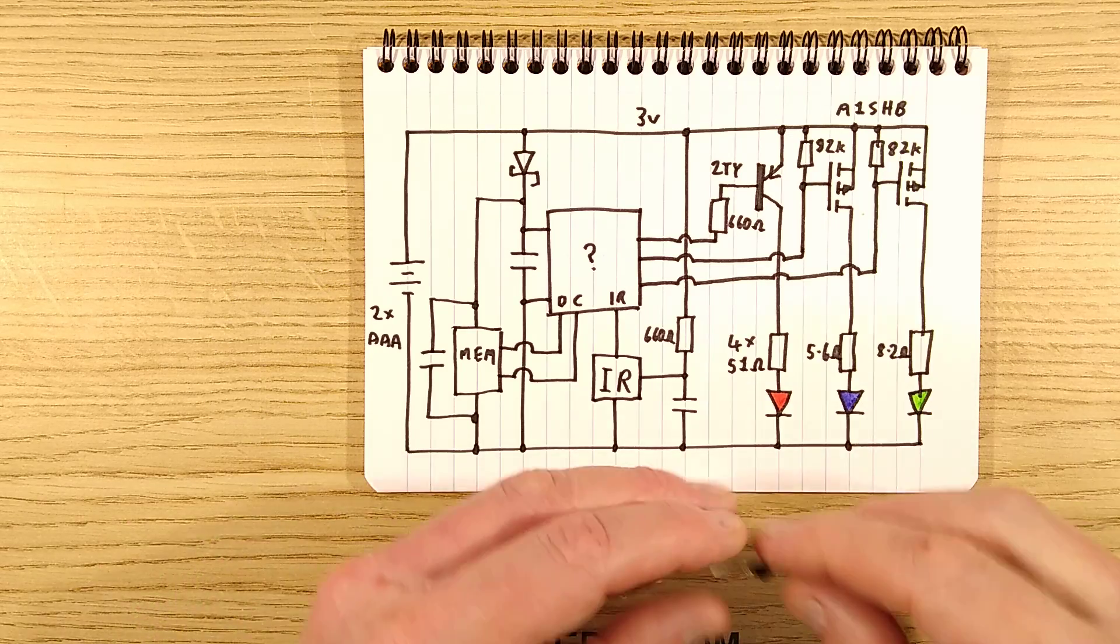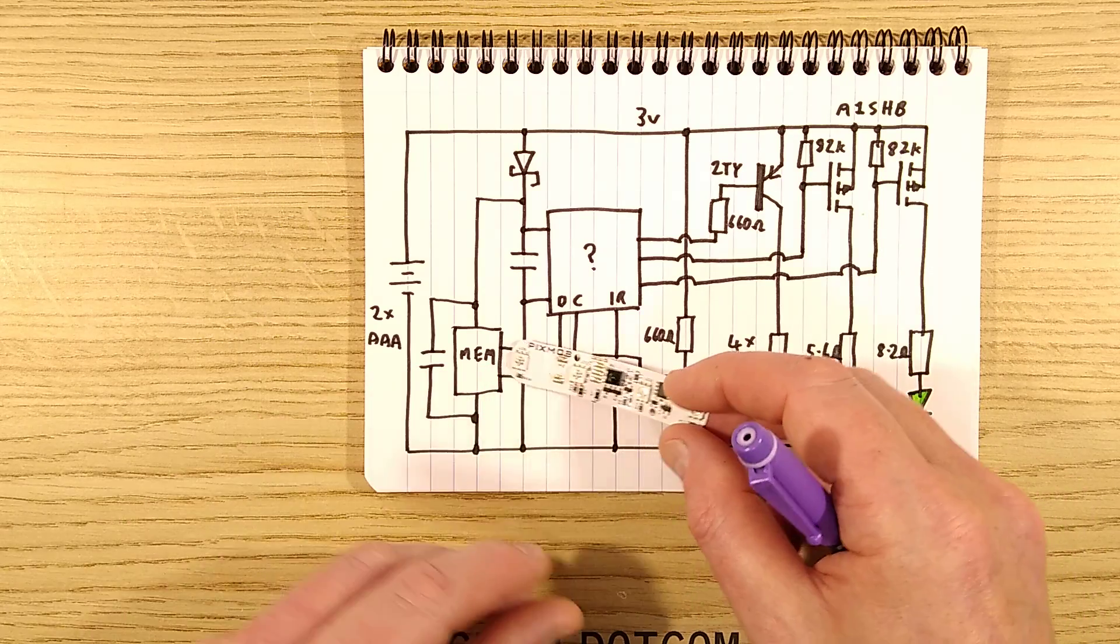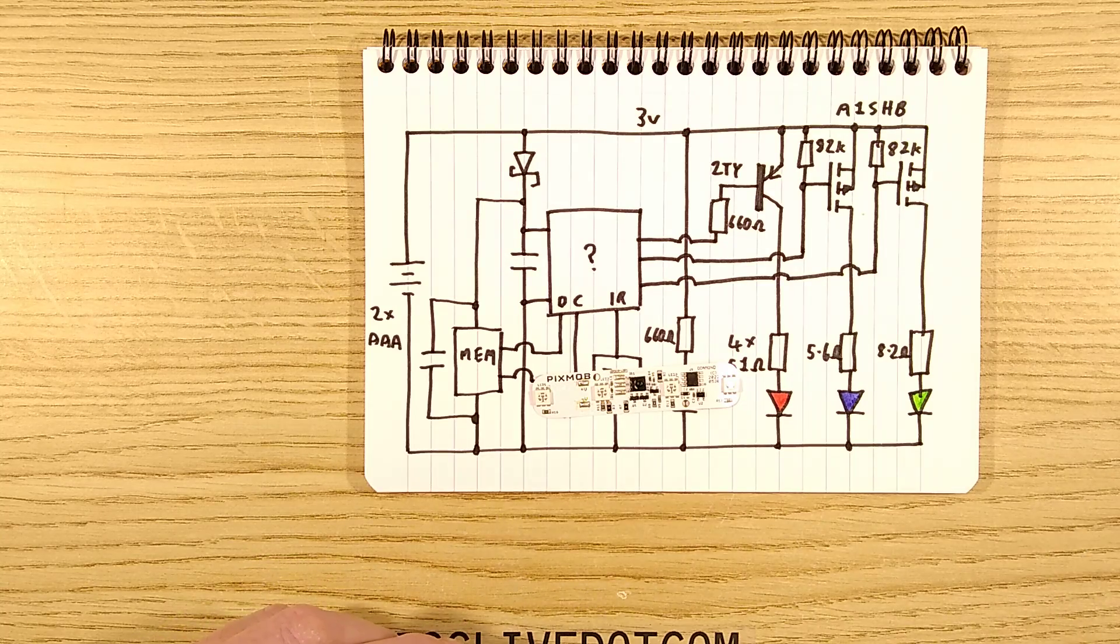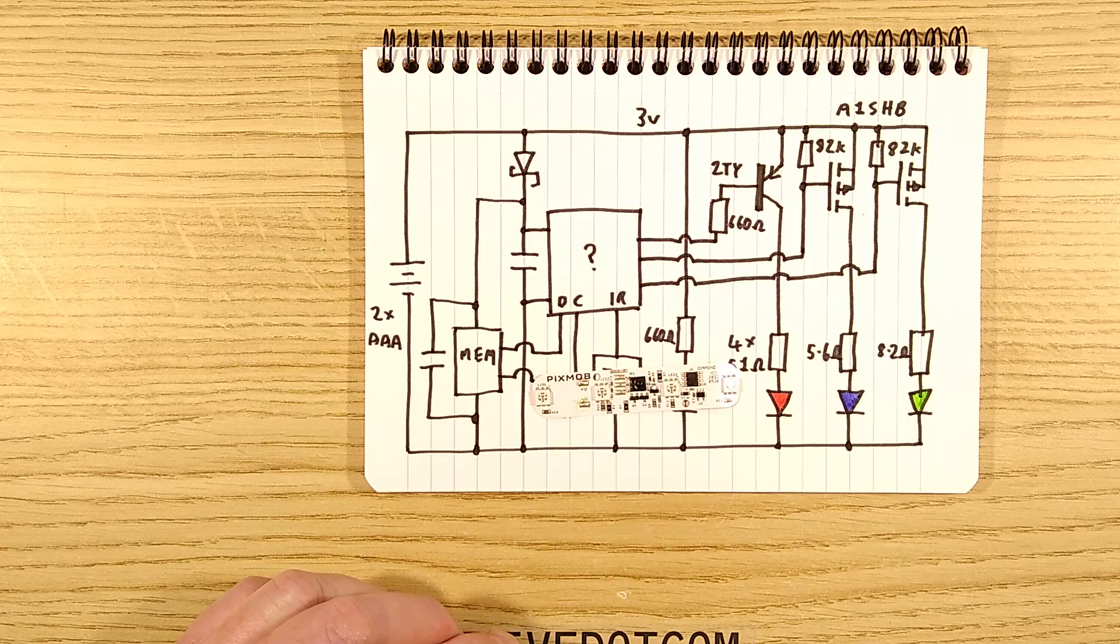The Pixmob infrared controlled audience wristband. It's actually quite neat inside, it's quite interesting. And I like the fact that it does take standard replaceable batteries, quite a neat device.